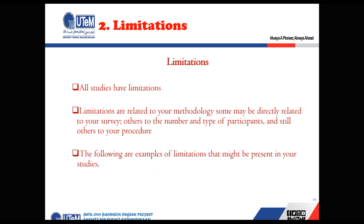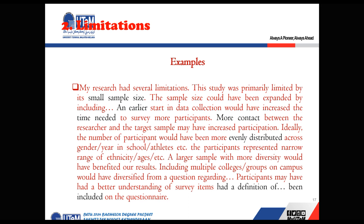The second part of the discussion section is limitations. All studies have limitations — especially because this is a PSM project, you have limited resources. You have to specify those limitations in your discussion part. Here is an example: 'My research had several limitations. The study was primarily limited by a small sample size.' You start by stating the main limitation, then give the explanation for why you had that limitation, and then explain how it can be improved — for example, how you can get a bigger sample size.